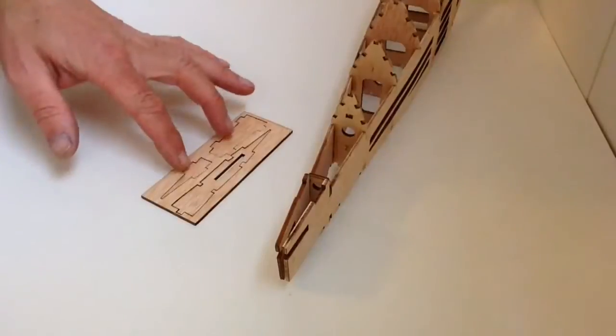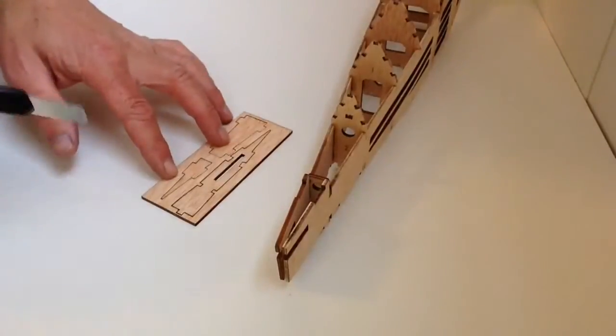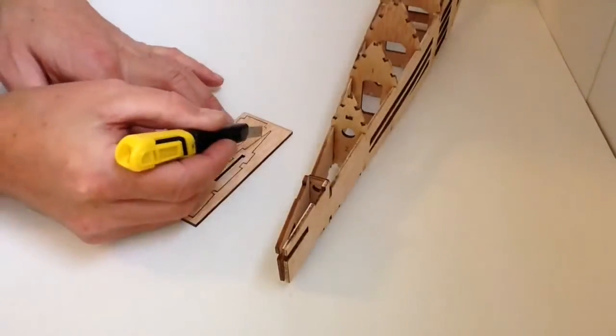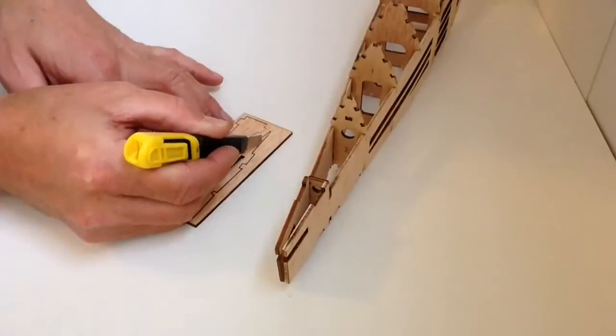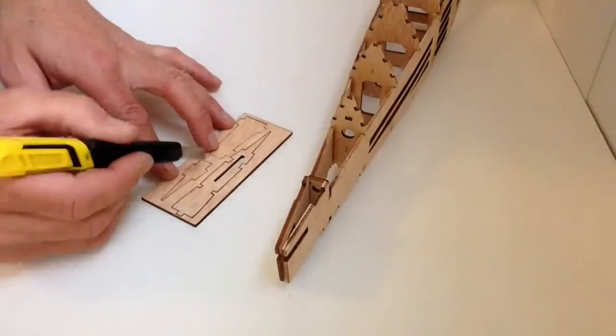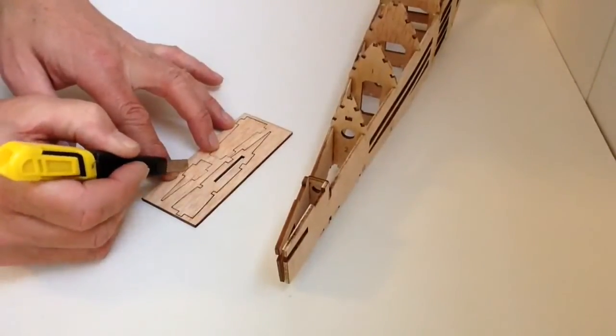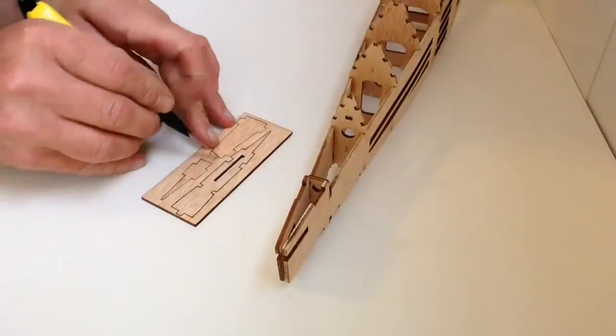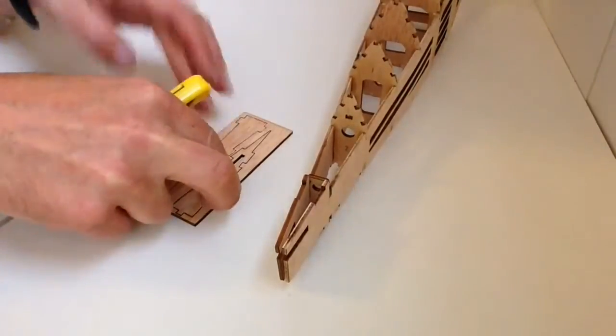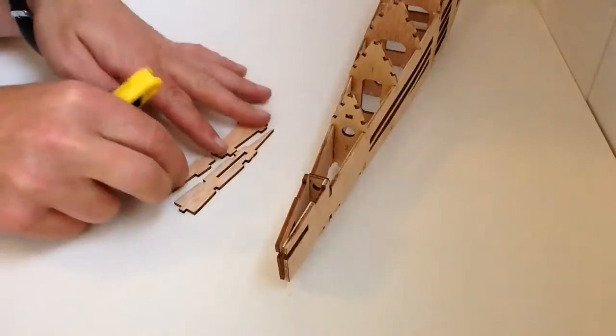Take the laser cut section and just gently where they're joined, just cut away, releasing the sections. When you've done that, you should have those.